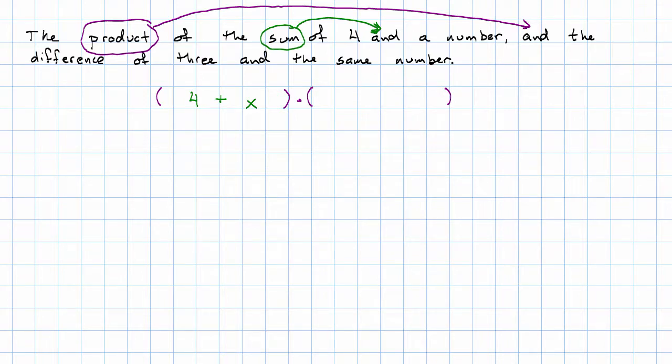Okay. So I've finished with this green sub-expression. The other sub-expression is the difference of three and the same number. So three minus the same number. Notice I was told it was the same number. That means that both of the letters that I use should be X or whatever letter I picked for the first number. I use it again to represent that same number again.